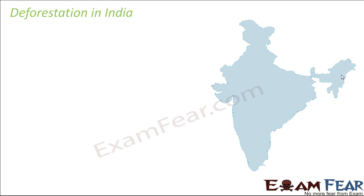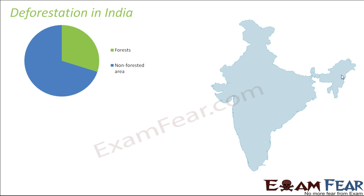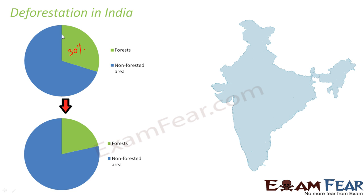Specifically in India, deforestation has drastically increased in the last couple of years. If you look at this graph showing how much area was covered by forests in India, almost 30 percent of the entire land was covered by forests at the beginning of the 20th century. But towards the end of the 20th century, that percentage reduced to around 19 percent — so in one century, forest cover dropped from 30 percent to 19 percent.